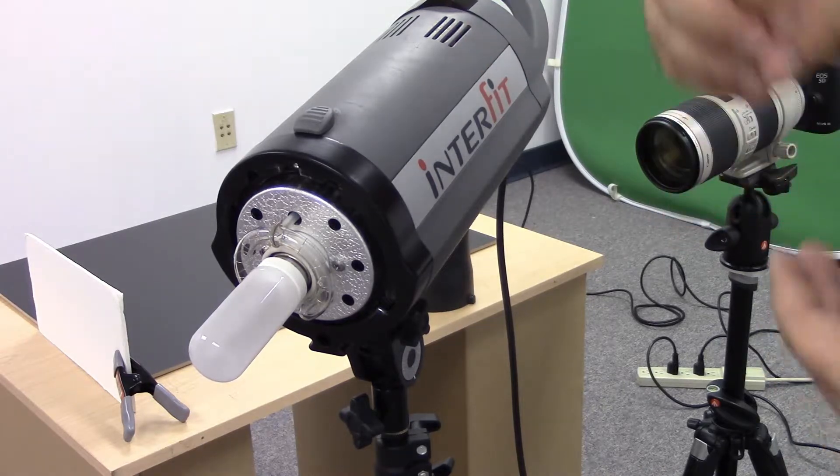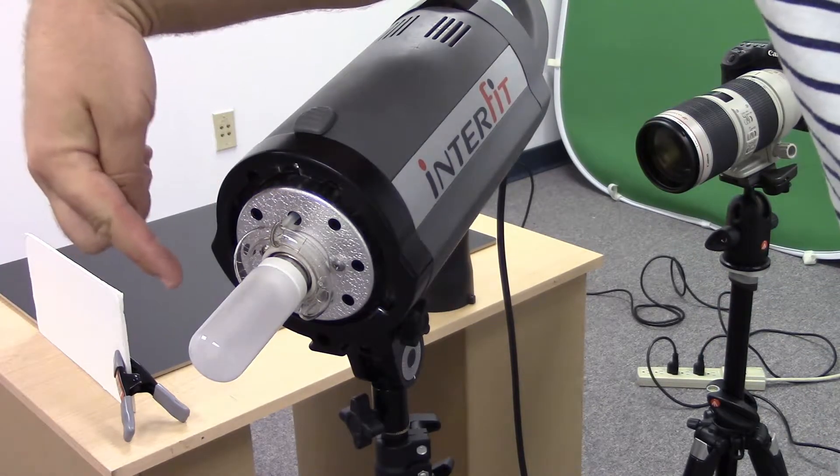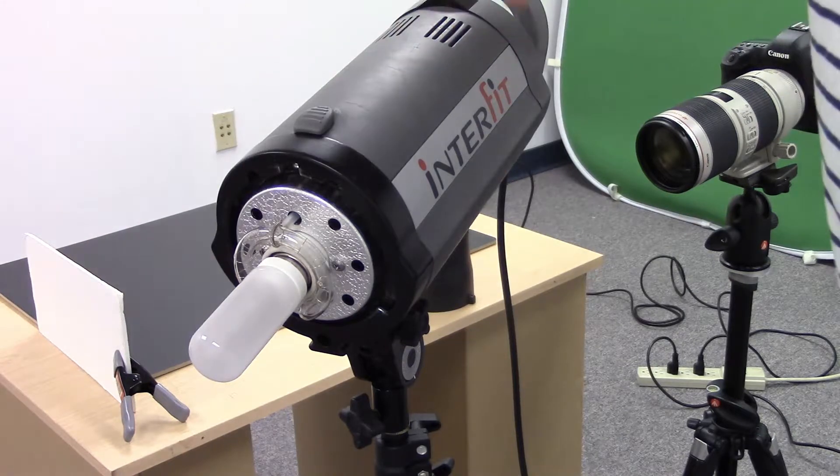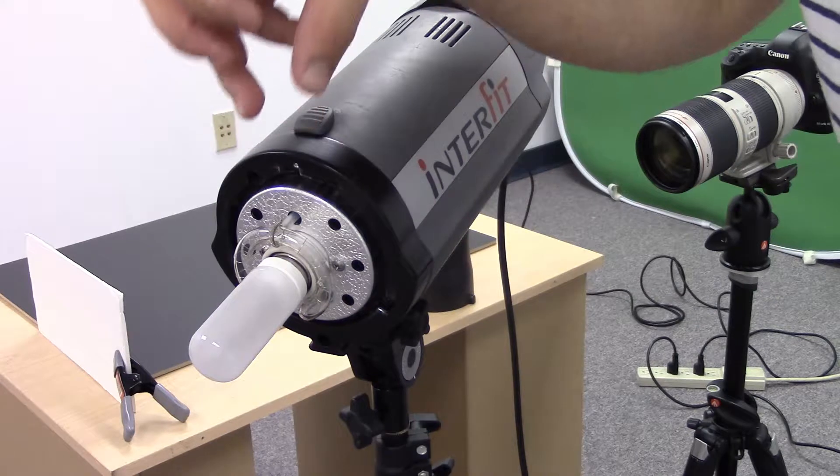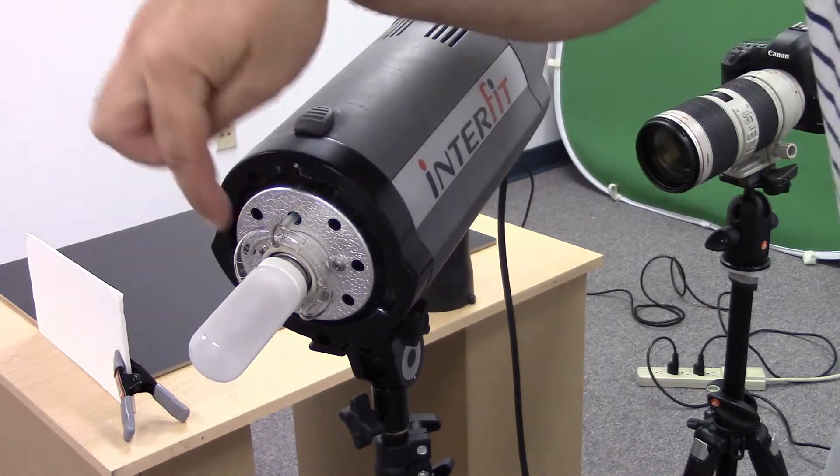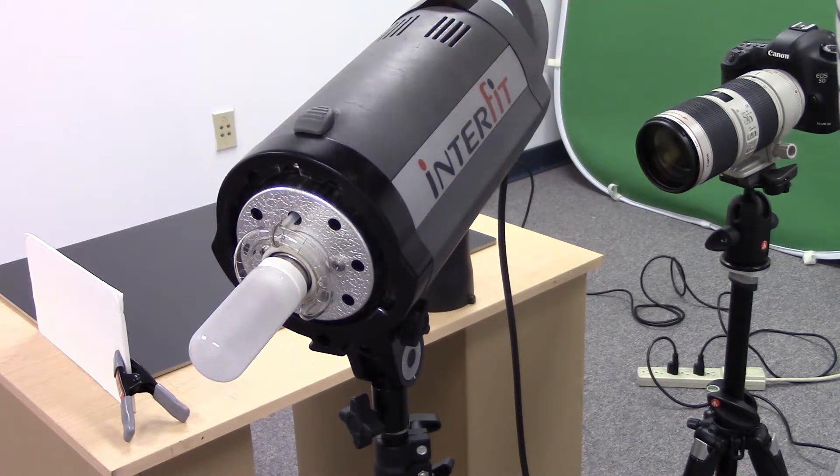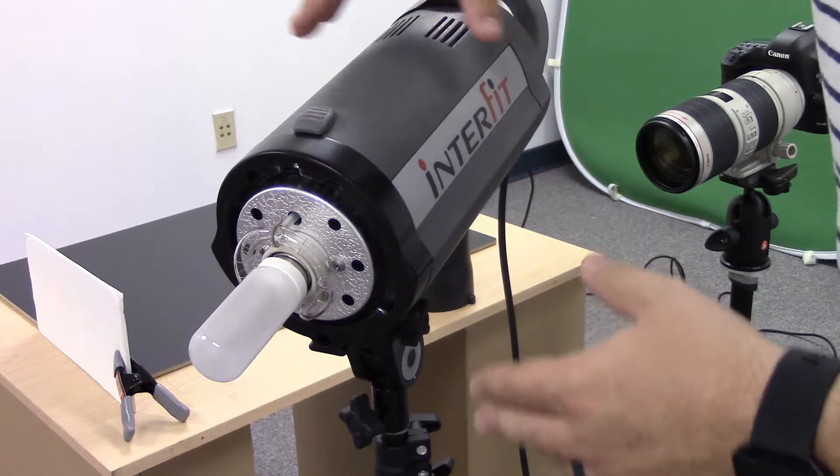Now this light contains two different bulbs. The first bulb is this modeling bulb, this long bulb right here. This is a continuous light bulb, it's an incandescent light, it's going to stay on and it's going to get hot. But this is the light that allows you to see where your light is, your light direction and different stuff like that.